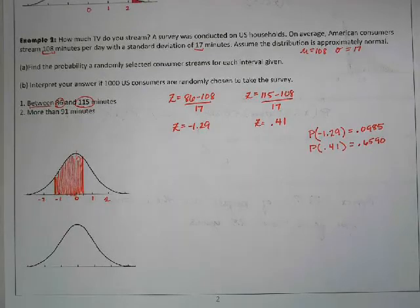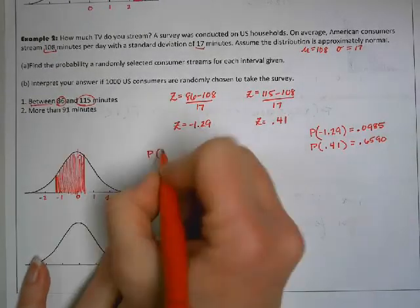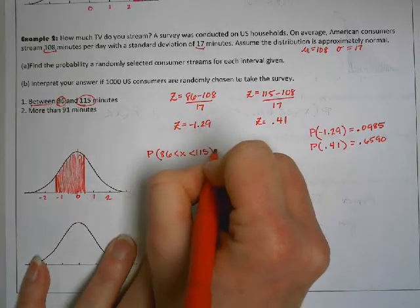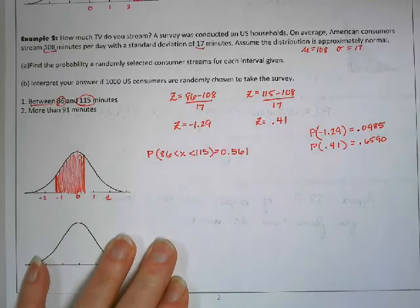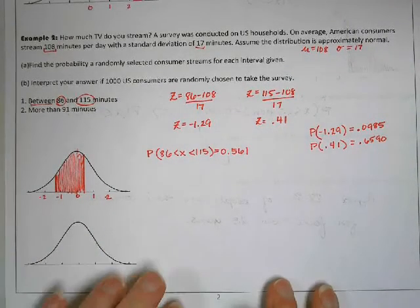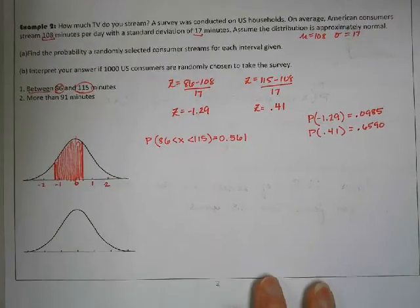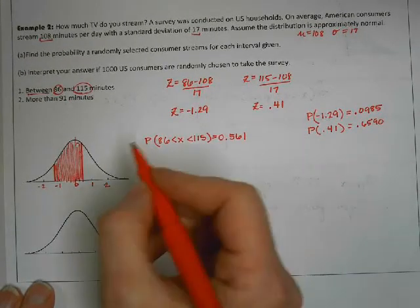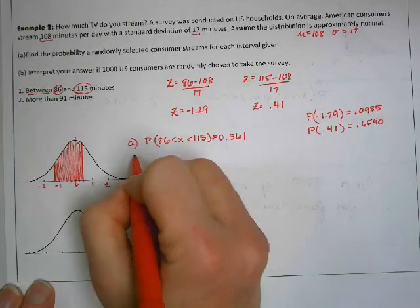And I get 0.561. So the probability that x is between 86 and 115 is 0.561. That's part A. I found the probability.